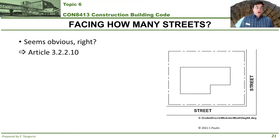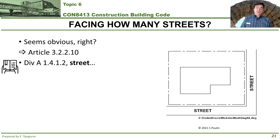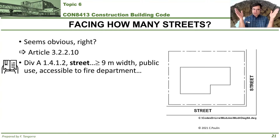The next characteristic we'll be looking at is how many streets a building is facing. This seems obvious, but it turns out it's not quite as obvious at first glance. I recommend you check out article 3.2.2.10 related to this. It's also important to know the building code's definition of 'street': minimum width of nine meters, must be public and in public use — not private — and must be accessible to fire department equipment and personnel.